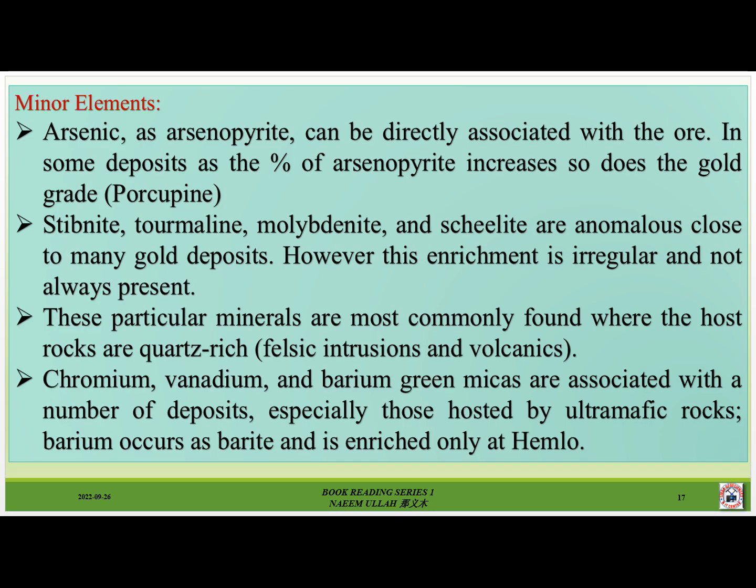Arsenic as arsenopyrite can be directly associated with the ore; in some deposits, as the percentage of arsenopyrite increases, so does the gold grade. Tourmaline, molybdenite, and scheelite are anomalous close to many gold deposits, however this enrichment is irregular and not always present. These particular minerals are most commonly found where the host rocks are quartz-rich clastic sediments, intrusions, and volcanics. Chromium, vanadium, and barium-bearing green micas are associated with a number of deposits, especially those hosted by ultramafic rocks. Barium occurs as barite and is enriched only at the Hemlo area of the River gold camp.